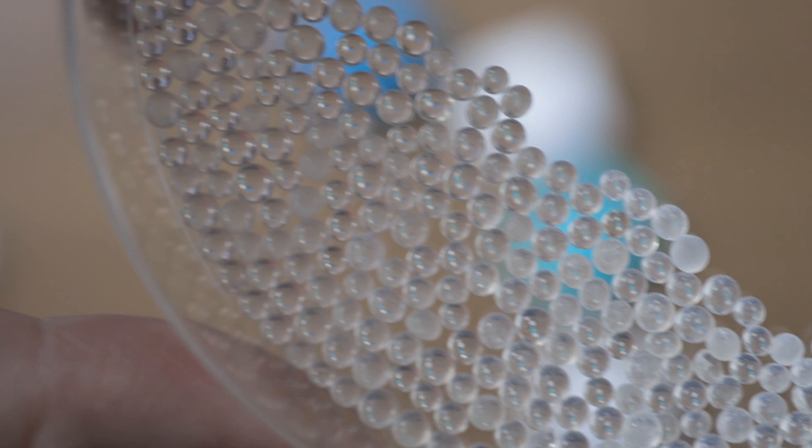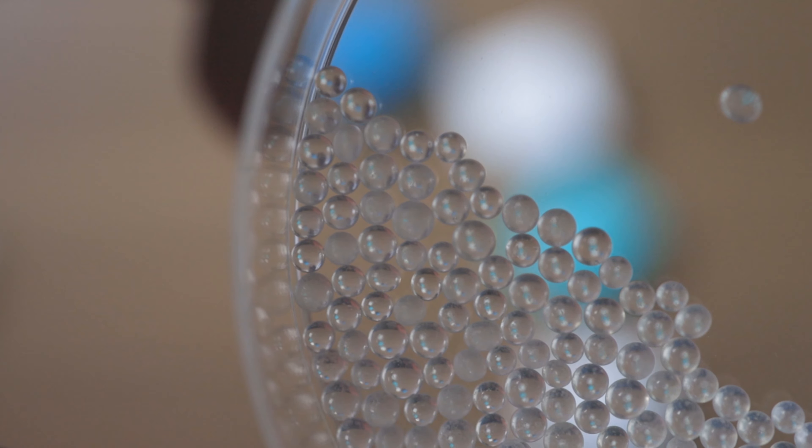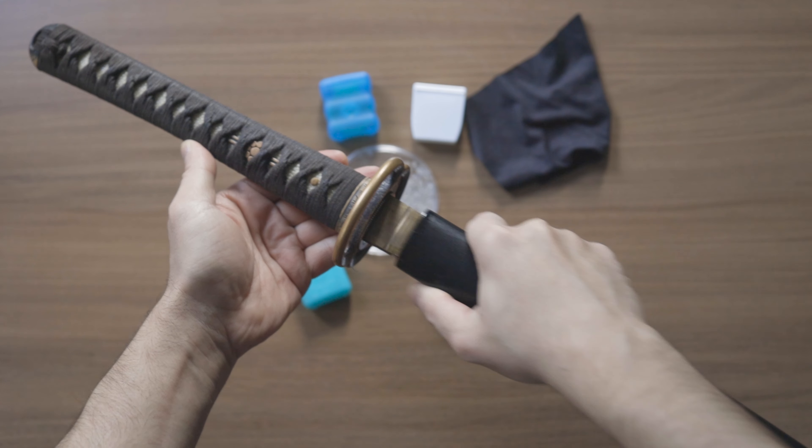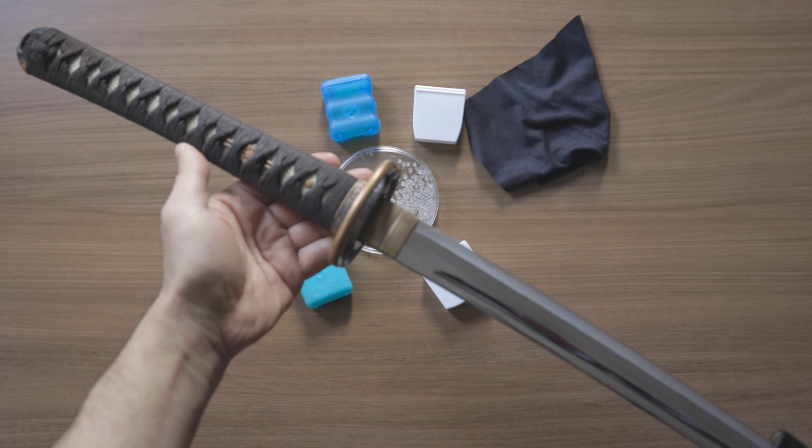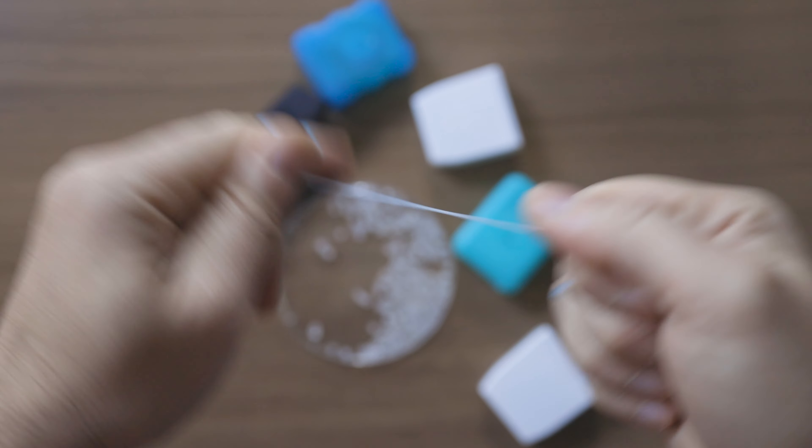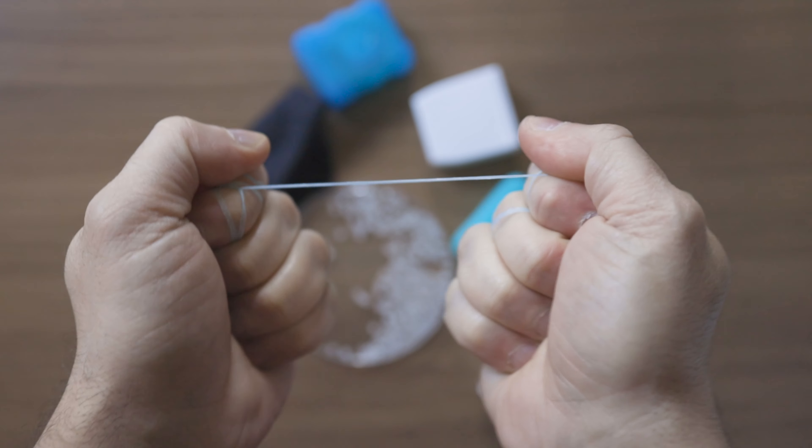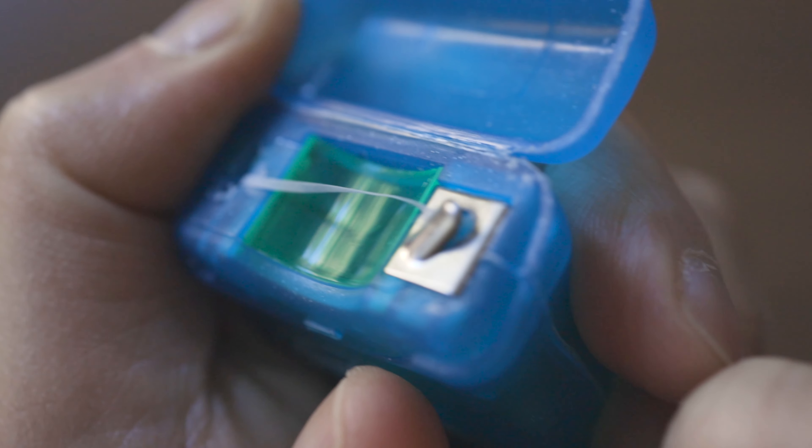and fold these beads until the floss becomes very strong, just like how Japanese swords are made. Dental floss is designed not to snap—it can only be cut at the correct angle, and if you pull it